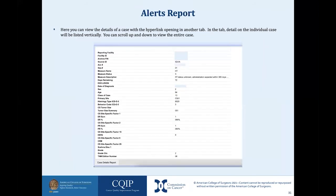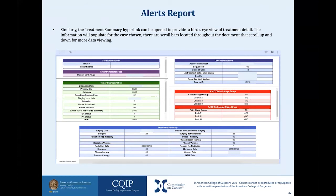Here you can view the details of a case with the hyperlink opening in another tab. Detail on the individual case will be listed vertically, and you can scroll up and down to view the entire case. The data can be exported to PDF or Excel by right-clicking in the field and choosing the format. To return to the prior page, either click on the tab title 'alerts report' or close the tab by clicking the X. Similarly, the treatment summary hyperlink can be opened to provide a bird's eye view of the treatment detail, including patient and tumor characteristics, specific AJCC clinical and pathological stage groupings, and a treatment summary.